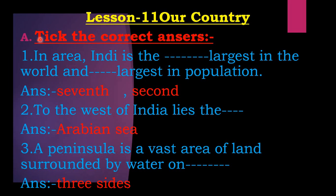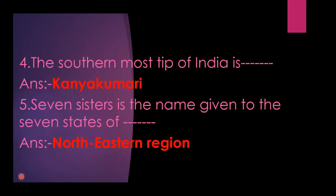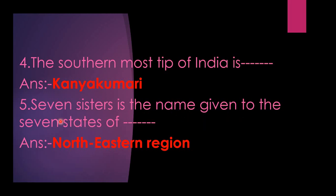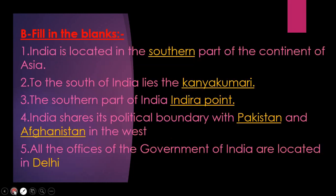Please write the date and lesson number 11, 'Our Country', as the heading, then write A. Now moving to the remaining questions: The fourth one — the southernmost tip of India is dash. The answer is Kanyakumari. Fifth one — 'Seven Sisters' is the name given to the seven states of the dash. The answer is the north-eastern region.